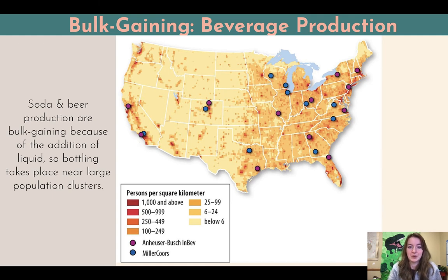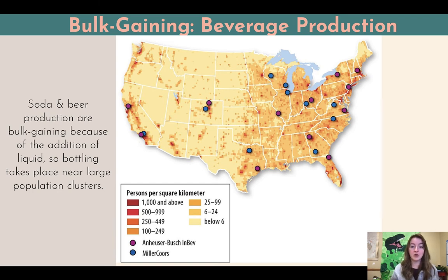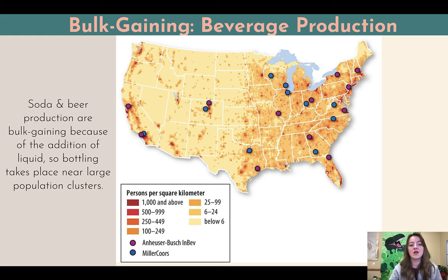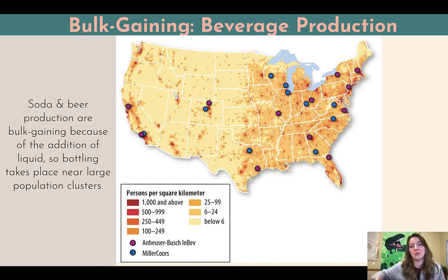Soda and beer production are bulk gaining because of the addition of liquid — liquid is really, really heavy. A gallon of water or milk weighs approximately eight pounds. Remember how many gallons get shipped at a time. So bottling takes place near large population clusters. You probably have a Coca-Cola or Pepsi Cola distribution company near you — if you have one, you probably have the other. It might not be right in your town if you live in a small town, but there'll be one near a large population cluster. It's way more efficient to add the water at the beverage distribution company and ship it from there cost-effectively.